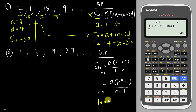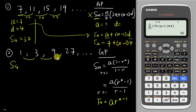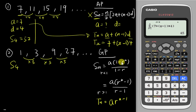Now for geometric progression the theory is still the same. You need to know the nth term formula for GP, which is a times r to the power (n minus 1). Let's say I want to find S4 for a GP sequence. I know it's geometric because the relationship between each number is multiplication — here it's multiply by 3. If the pattern is multiplication or division it's GP; if it's addition or subtraction it's AP. GP is more complicated because you have two sum formulas and need to choose based on the r value.